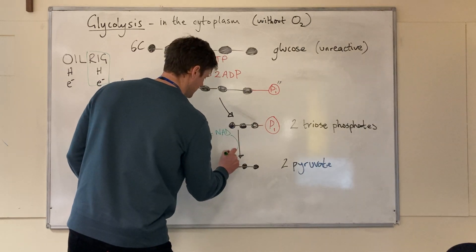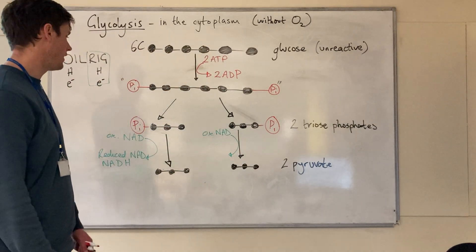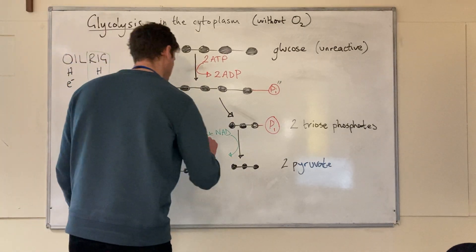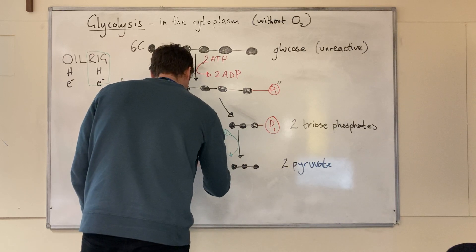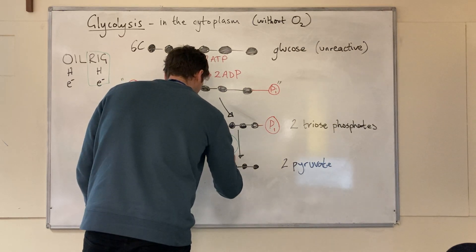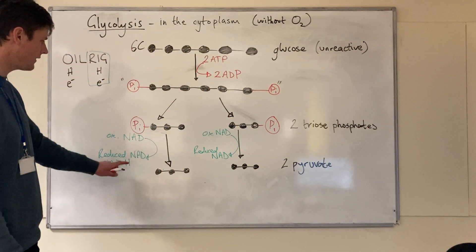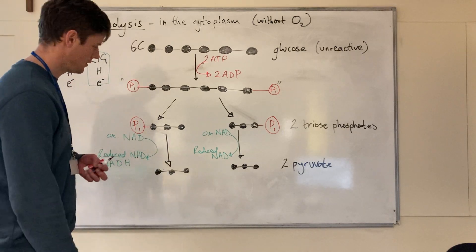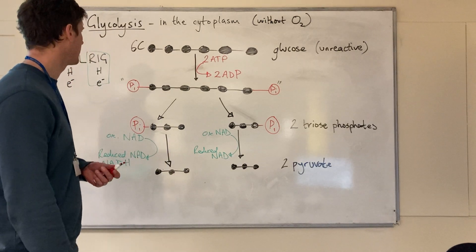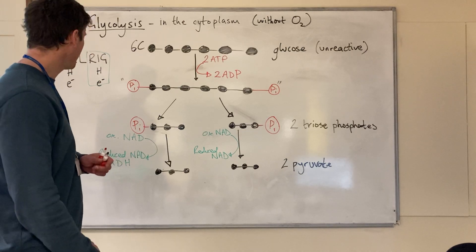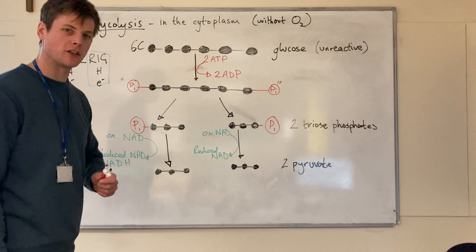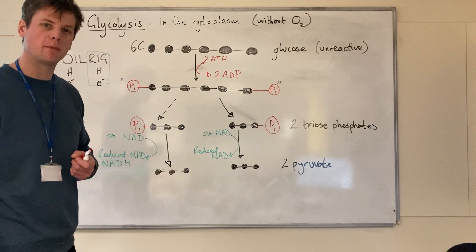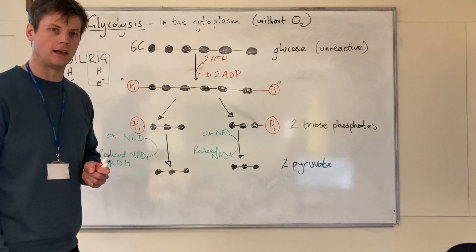NAD accepts protons and electrons from the triose phosphate and also becomes reduced NAD. This reduced NAD is really important because it will be used later on in respiration to provide high-energy electrons and hydrogen to the final stage of aerobic respiration, which is in fact when most of the ATP is produced.